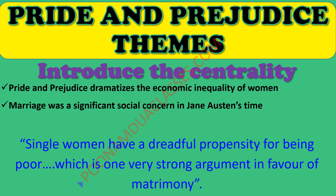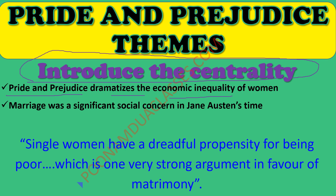After introducing the novel and the novelist, you can go towards the question about theme. The major theme of this novel is marriage. It is true that the chief occupation of Jane Austen's heroines — not only in Pride and Prejudice but across her works — was to get married, and life was essentially a matrimonial ceremony for all of them. Pride and Prejudice dramatizes the economic inequality of women: women were not given any financial opportunity and had to marry undesirable mates in order to gain financial security.